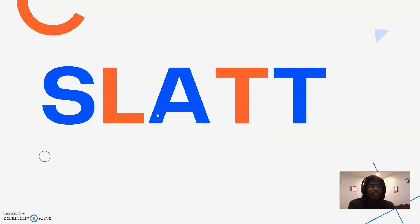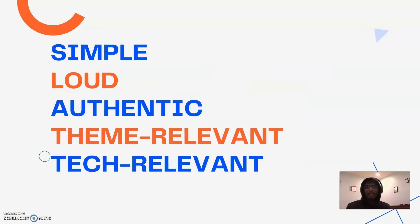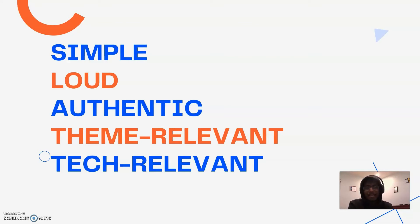I follow the acronym SLATT — S-L-A-T-T — and you can follow this acronym to make sure that your project is unique and stands out from everyone else's. If your project meets all of these requirements, I strongly believe you have a really good chance of winning and a really strong hackathon project. SLATT stands for Simple, Loud, Authentic, Theme Relevant, and Tech Relevant.